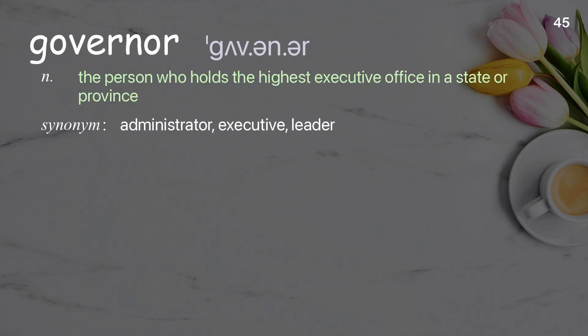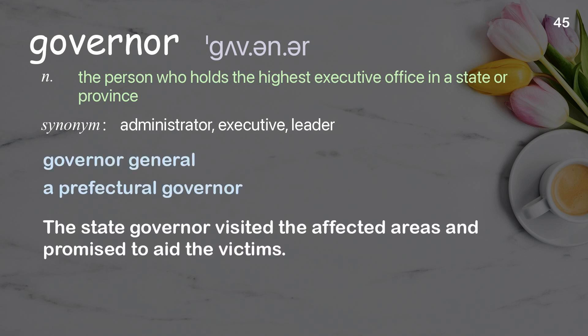Governor: The person who holds the highest executive office in a state or province. Examples: Governor General. A prefectural governor. The state governor visited the affected areas and promised to aid the victims.